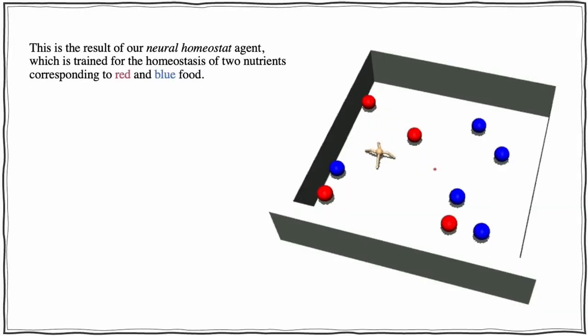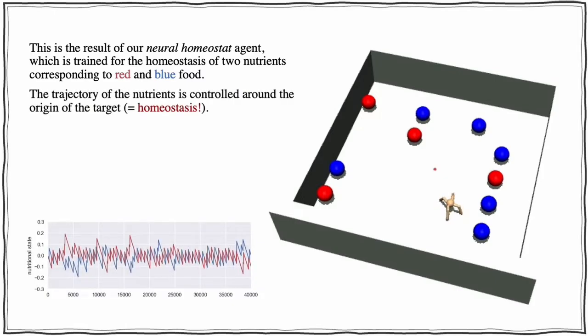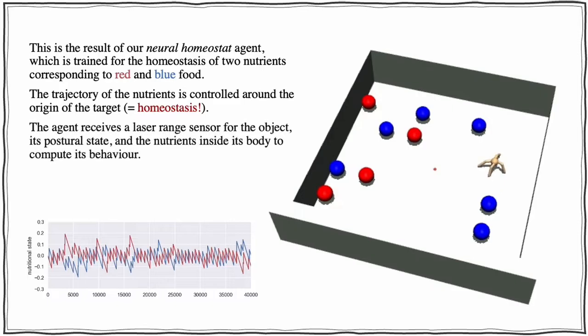This is the result of our neural homeostat agent, which is trained for the homeostasis of two nutrients corresponding to red and blue food. The trajectory of the nutrients is controlled around the origin of the target. The agent receives a laser range sensor for the object, its postural state, and the nutrients inside its body to compute its behavior.